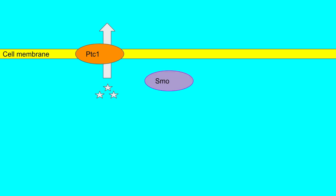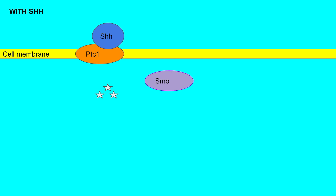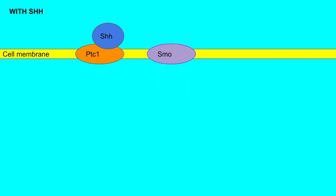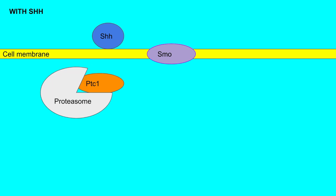Patched one inhibits smoothened by way of regulation of the concentration of things called oxysterols. Essentially, patched one keeps the oxysterol concentration low such that smoothened is unable to enter the membrane. However, when sonic hedgehog enters the picture, the oxysterol concentration builds up near smoothened such that smoothened is now able to enter into the cell membrane. Meanwhile, patched one can fall into the cytosol to be cleaved by proteasomes and rendered inactive.